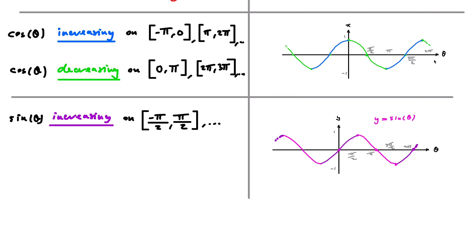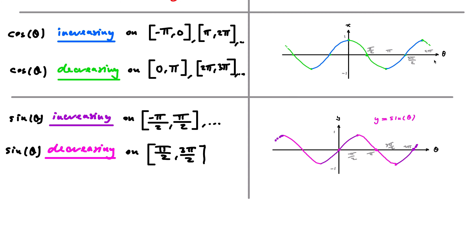Sine of theta is decreasing on pi over 2 to 3 pi over 2, and so on. You take this piece and shift it in multiples of two pi in either direction to get all possibilities. So it's alternating between increasing and decreasing, and neither sine nor cosine is increasing or decreasing overall. But if you restrict to certain intervals, they will be.